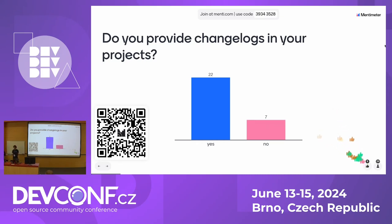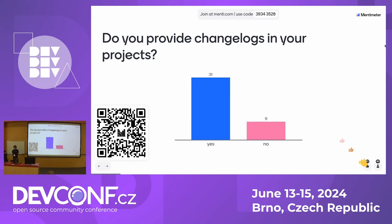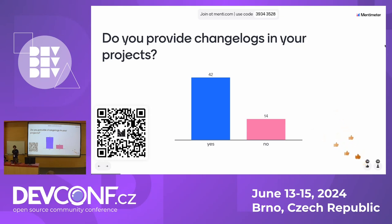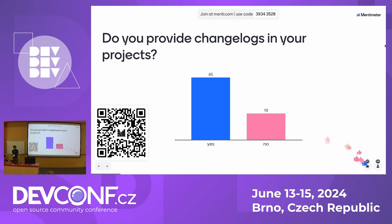I did my master thesis about the pain points in the release process, and actually changelog management was identified as one of the biggest pain points. You will also see some charts here, and they will all be from my master thesis, where I was collecting data from multiple thousand GitHub repositories. So that's just as a source note for the data. I hope that most of you are by this time connected. And yeah, it is as we were hoping — mostly yes, the blue color. So you are right in this place, and I think we can continue.